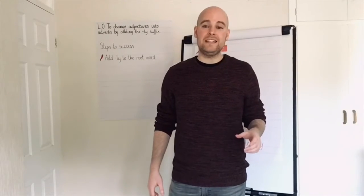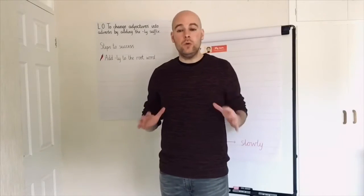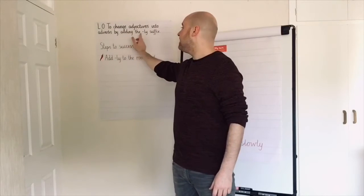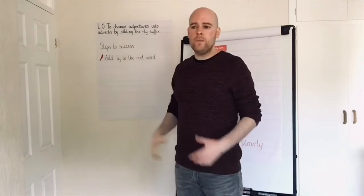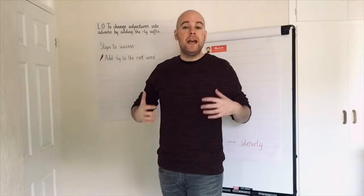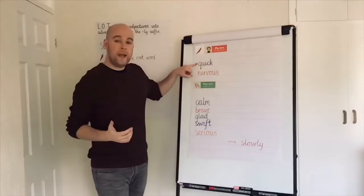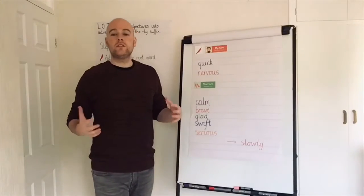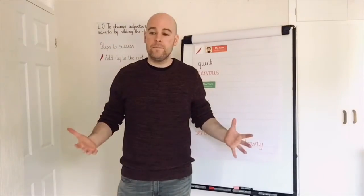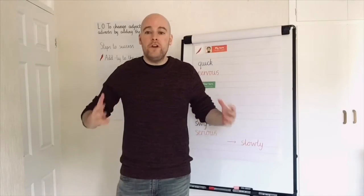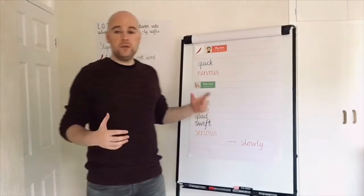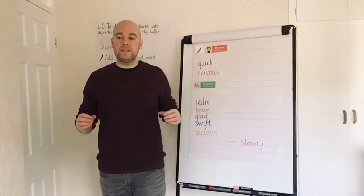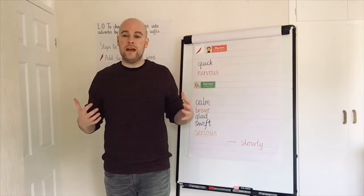Now you've practised adding the ED suffix, it's time for today's learning objective, which is also about using a suffix. It's to change adjectives into adverbs by adding the LY suffix. Adjectives, as we know, are words that describe nouns. I've got some examples of adjectives here: quick, nervous, calm, brave, glad, swift, serious — they could all be used to describe a noun, a person, a place, a thing. Now, adverbs describe verbs — they describe how something is being done. And we can use the LY suffix to help us spell them correctly. They're great things to use in our writing because it really helps our reader get a clear picture of what's happening.